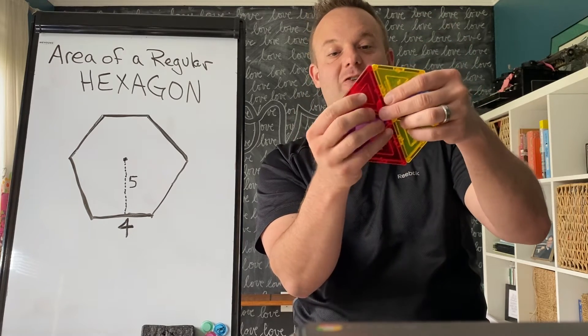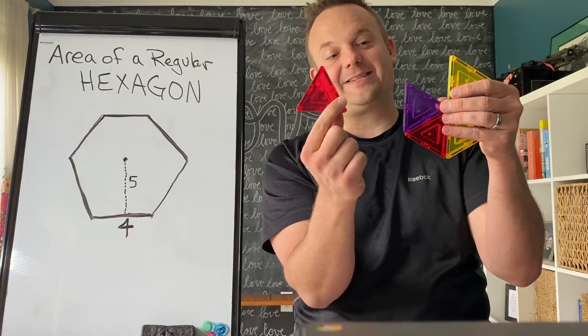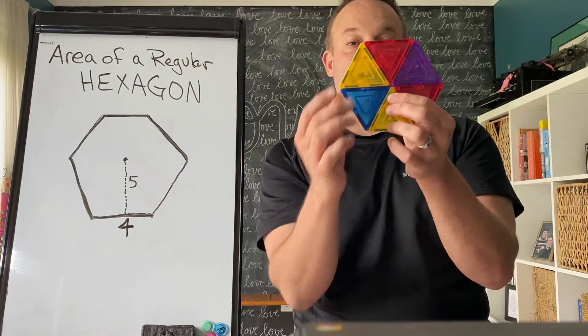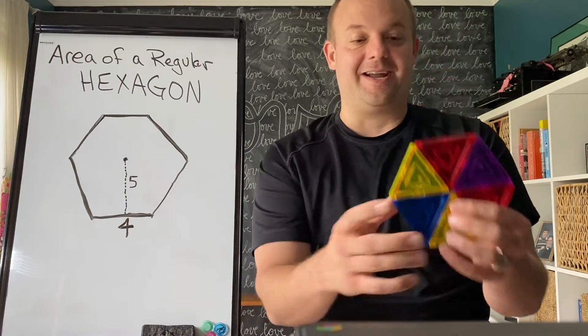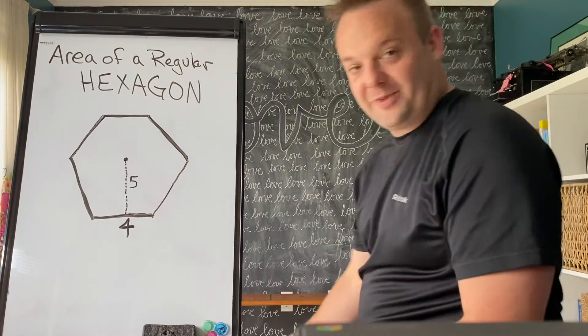And if you find the area of just one of these triangles, you can multiply that by 6 in order to find the area of the regular hexagon. Alright, so I'm going to put those geometric blocks down, those magnet blocks. Do you have some of those at home?